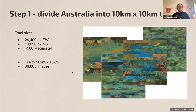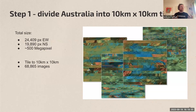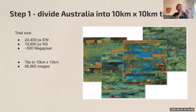The first step is dividing Australia into 10 by 10 square kilometer tiles — the relevant scale for ore deposits that range from hundreds of meters to kilometers in size. Tiling the whole country this way produces 68,000 images. Each tile has a color and texture that reflects the magnetic and density properties being mapped.